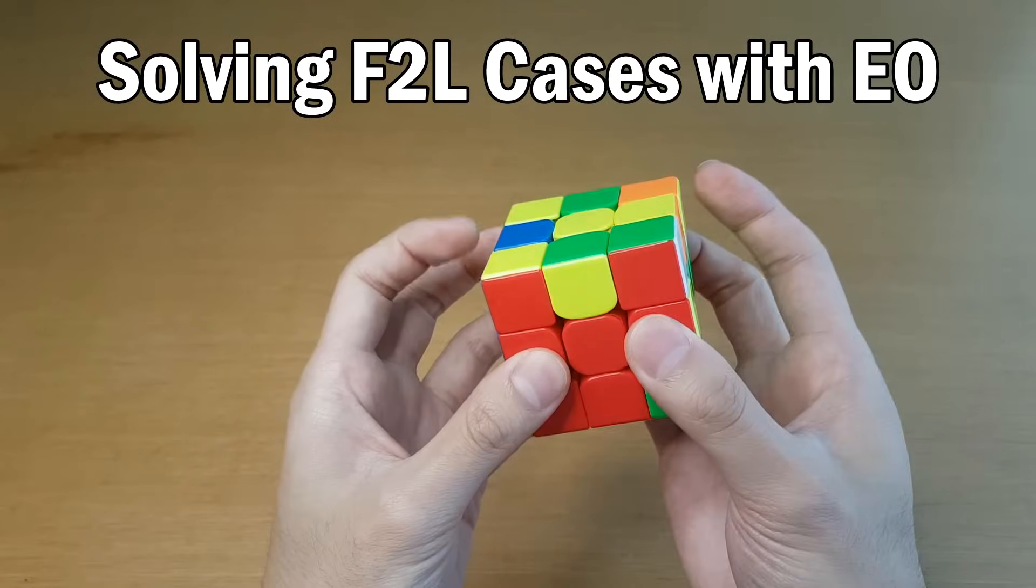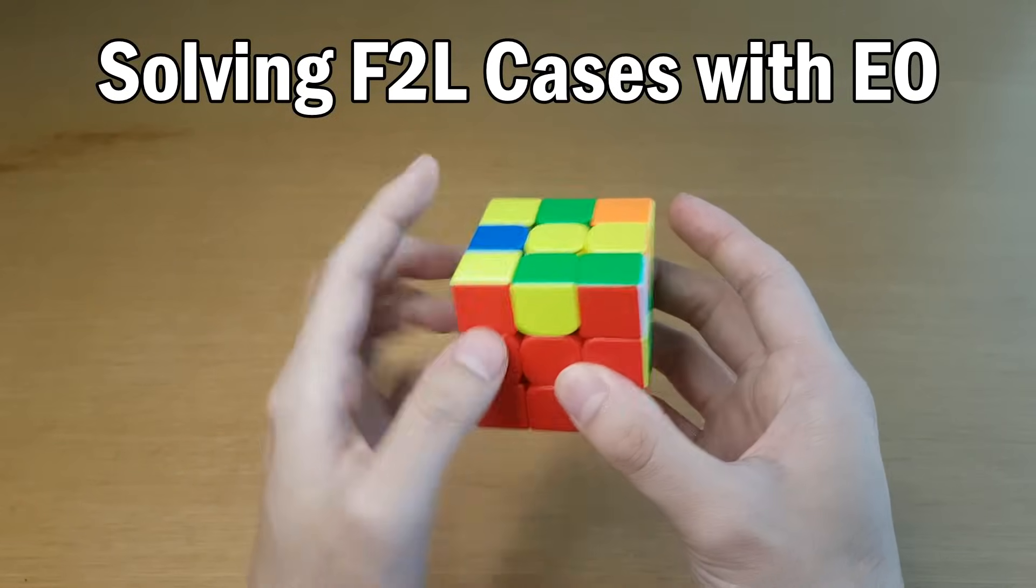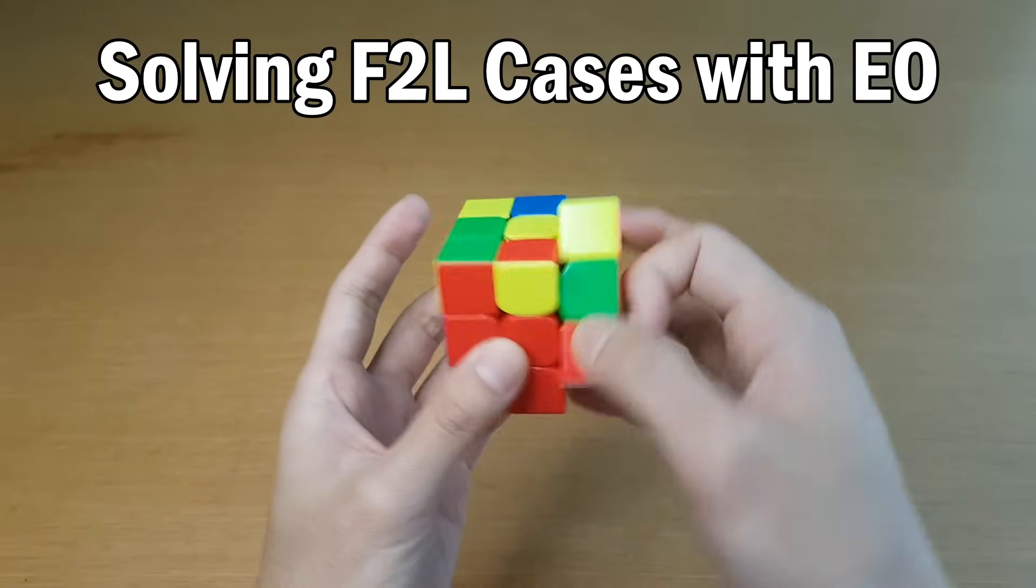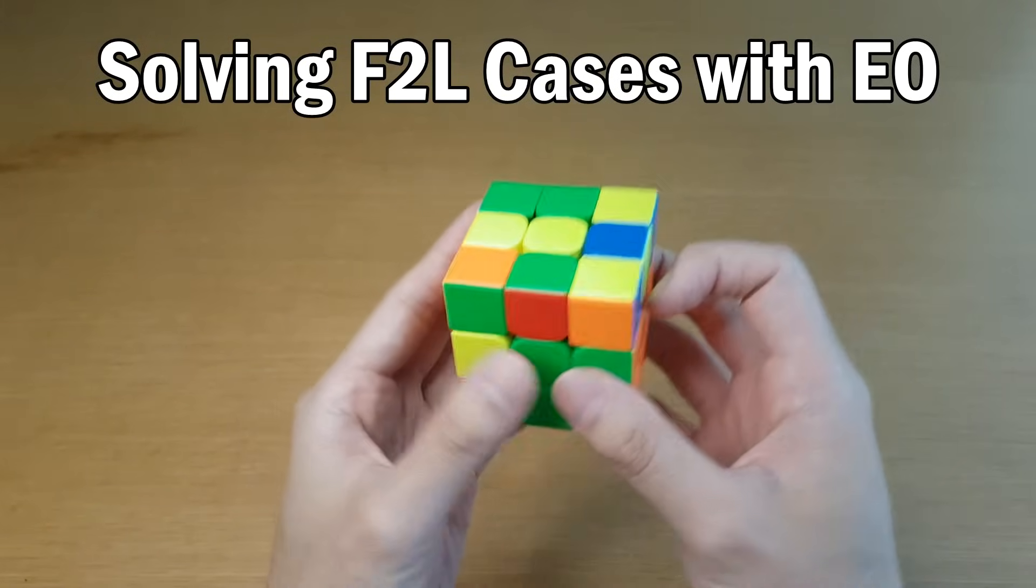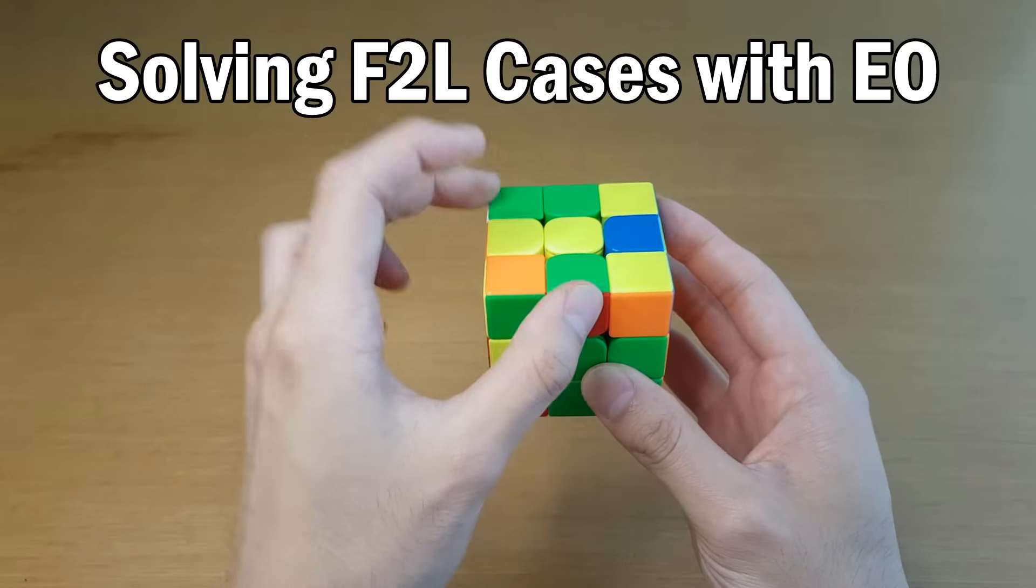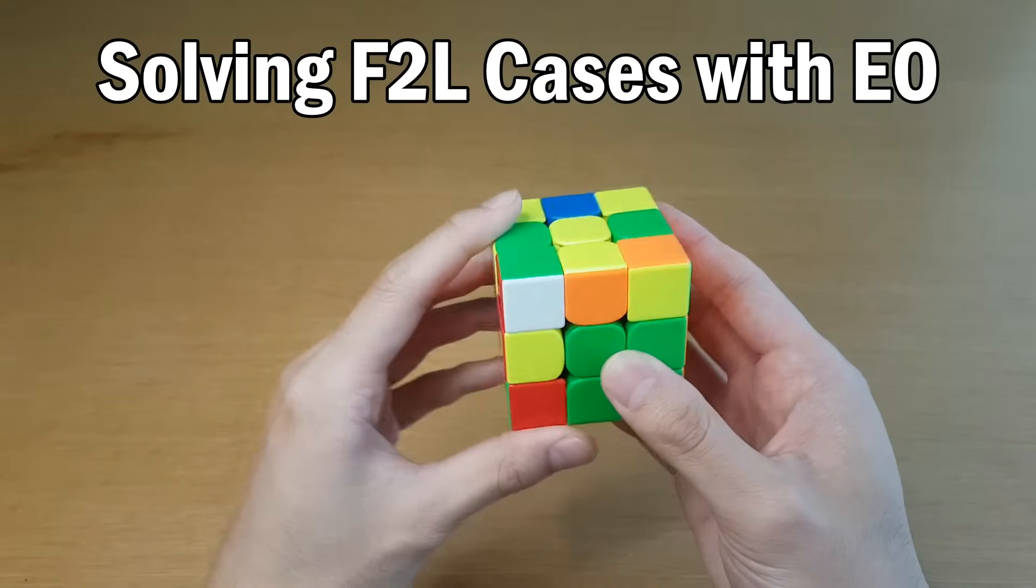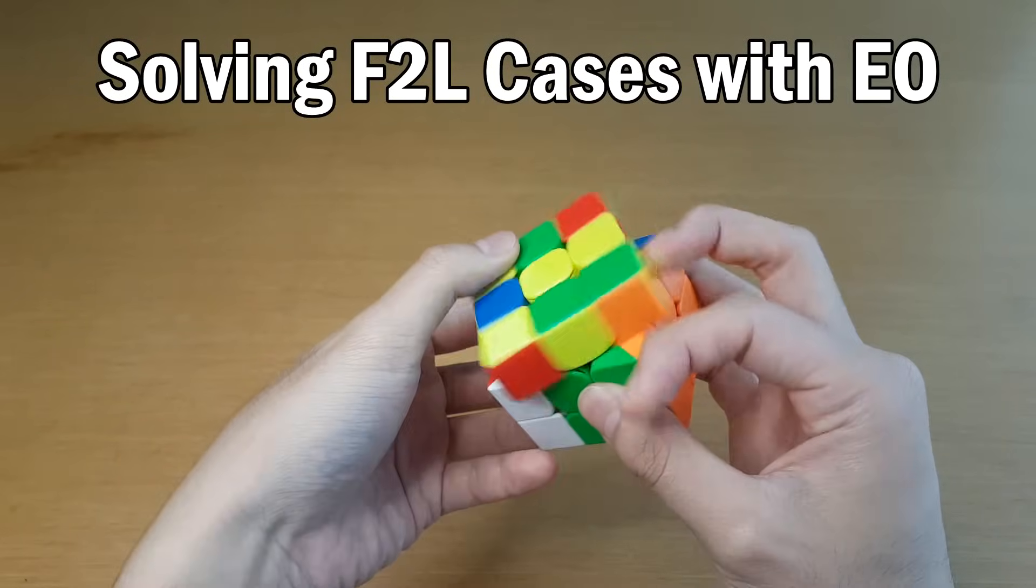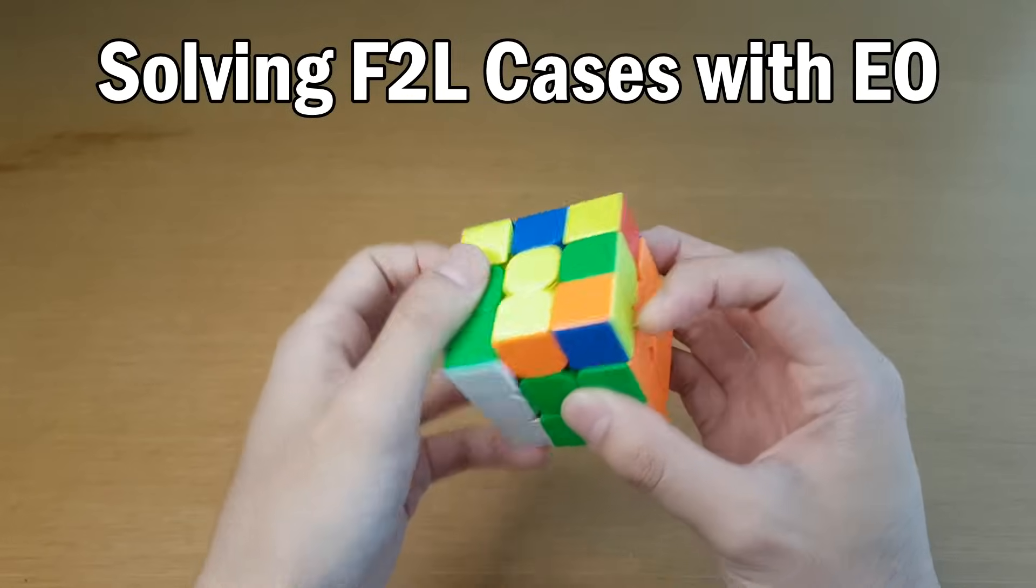Now what if instead of this case, we had the flipped edge version, which is like this? Well, in this case, you would first see the edge and notice it is a bad edge. So you will not even try this because you first need to do a cube rotation. Then you have to solve this case rotationless, which is not like this. We're not using F moves. We are instead going to solve it like this by pairing them up and then insert.